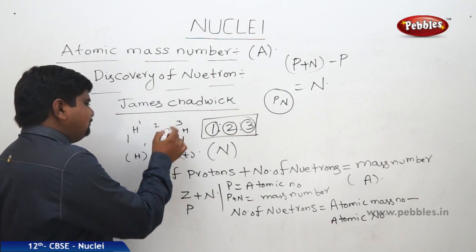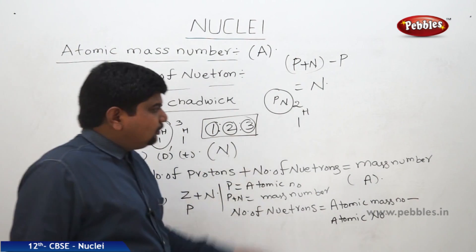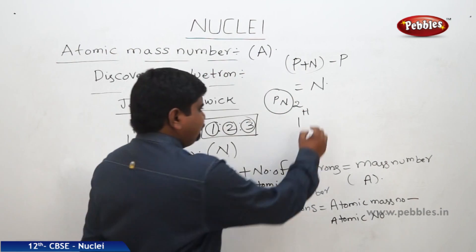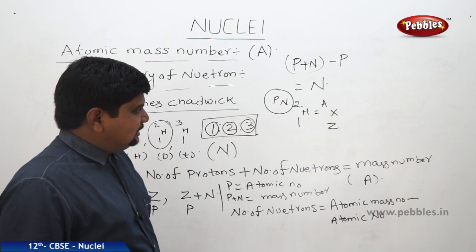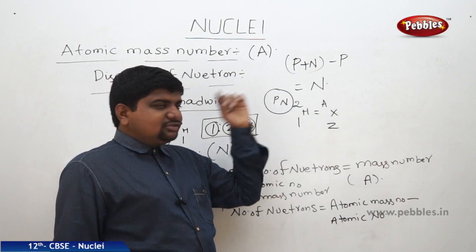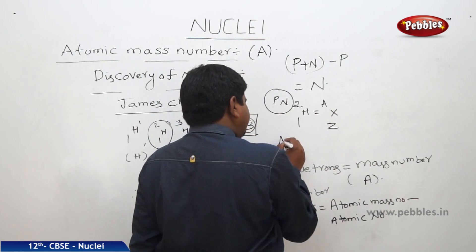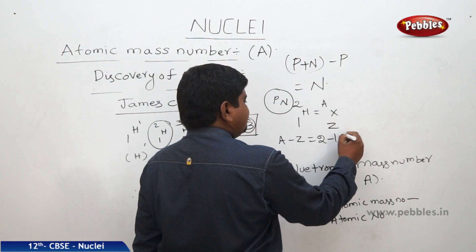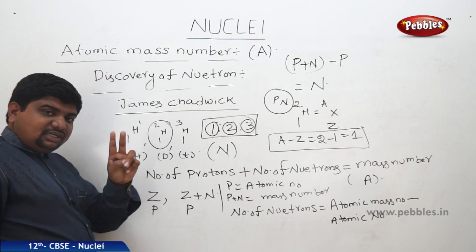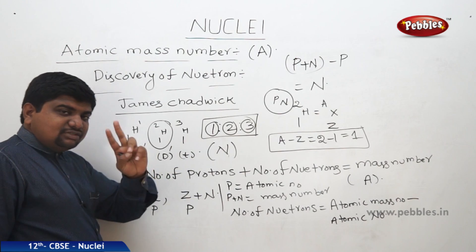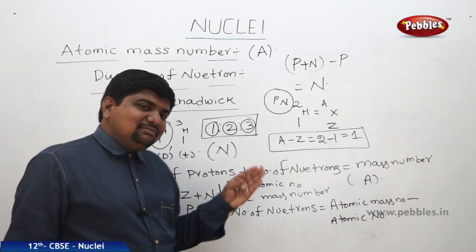For example, take the hydrogen isotope ¹H² (deuterium): Z = 1, A = 2. The chemical element is written with Z as atomic number and A as mass number. To find the number of neutrons in deuterium: A − Z = 2 − 1 = 1 neutron. For regular hydrogen: 1 − 1 = 0 neutrons. For tritium ¹H³: 3 − 1 = 2 neutrons. The number of protons and electrons are always equal, while the number of neutrons varies with the isotope nature of the elements.